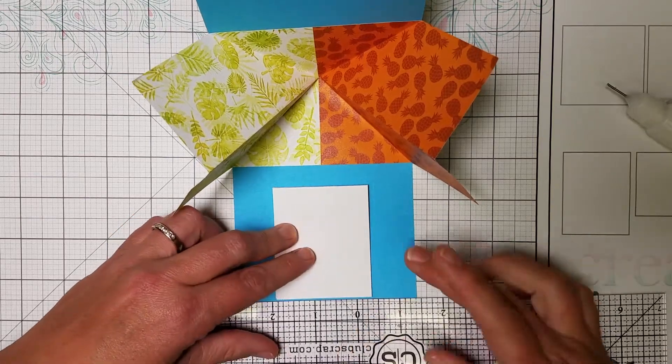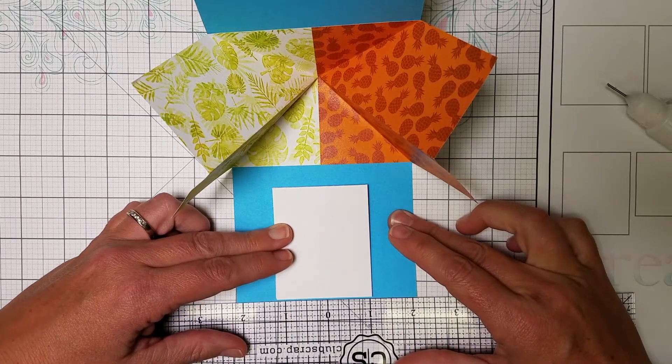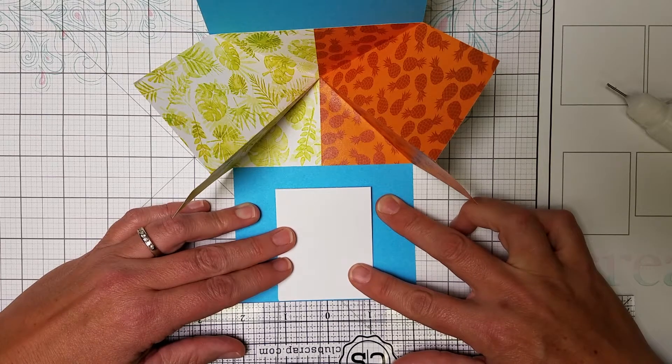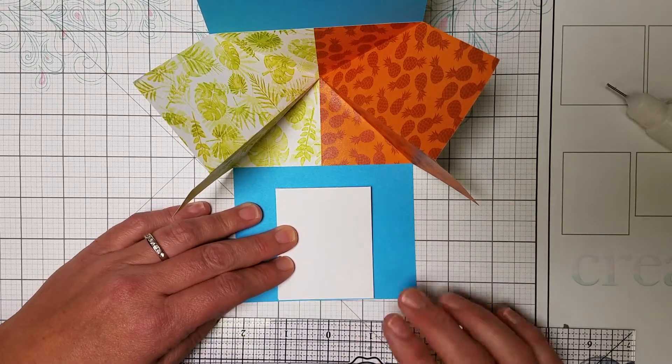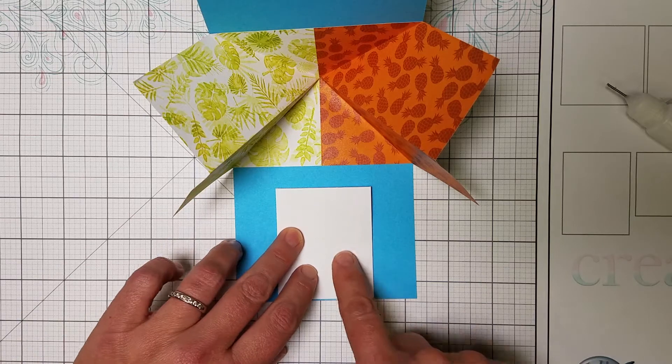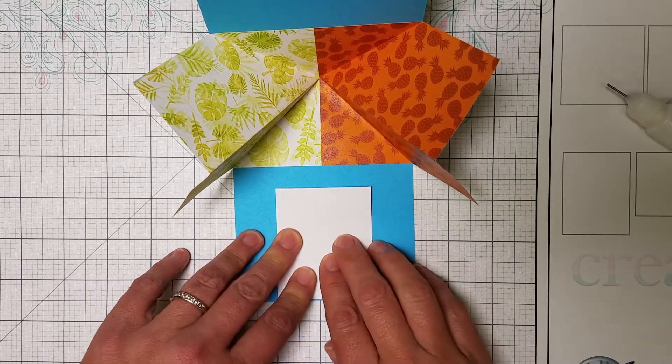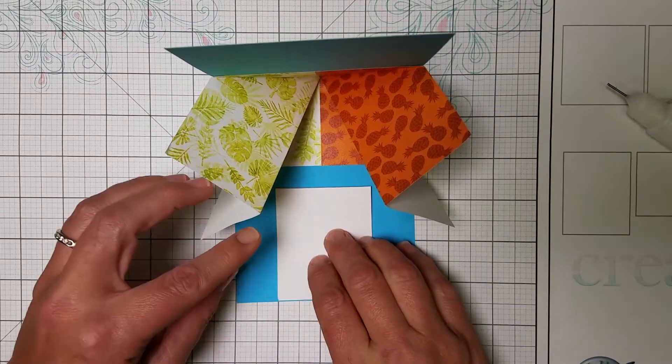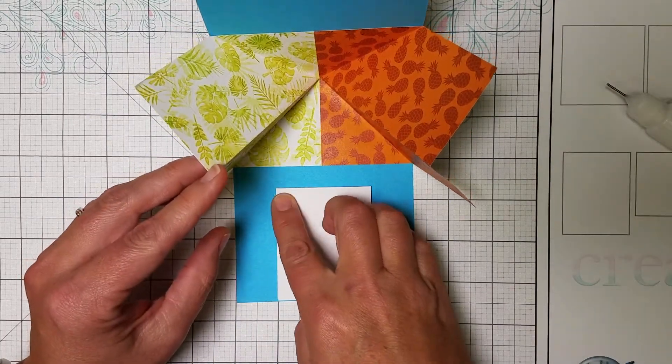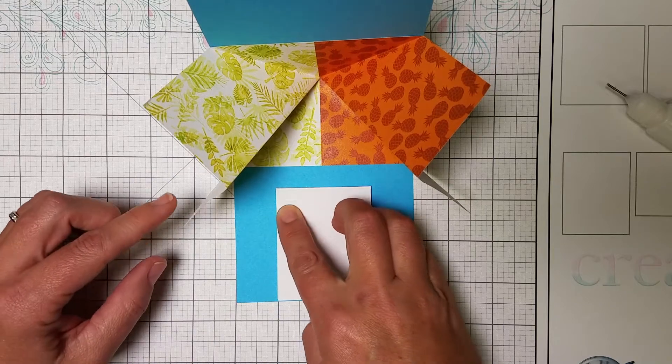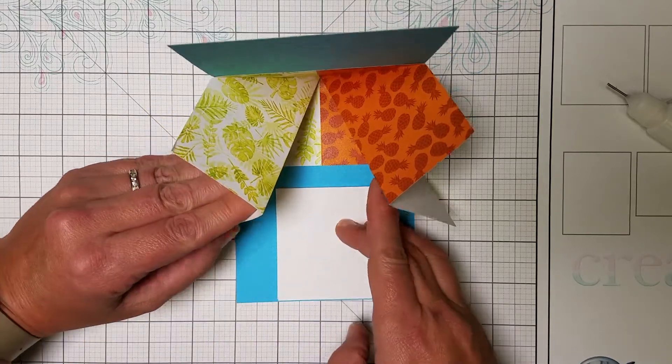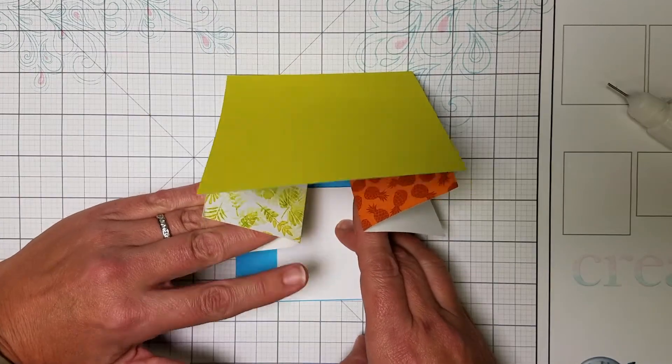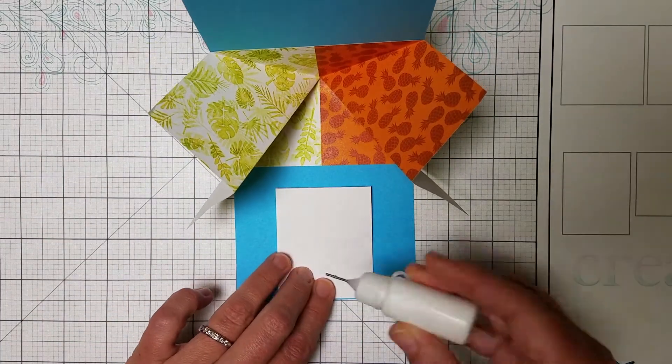If you want, you can use the zero center of your ruler to find the center of the card. I eyeballed mine, to be honest with you. I know that's unusual for me, but I did. I just eyeballed it. Now the thing is a temptation might be to stick it right where it is, but that's not the case. When this pop-up mechanism closes, what we really want is adhesive in the top left corner of this M-shaped mechanism so that the flap of this piece of paper right here sticks to that, just the one.